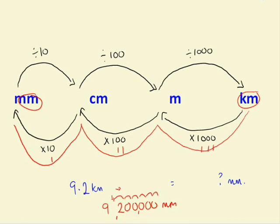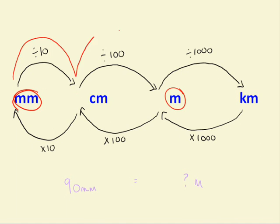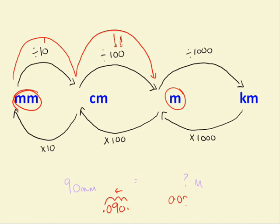We'll give another example. What is 90 millimetres in metres? We're going from millimetres to metres, so we divide by 10 and then divide by 100. Because I'm dividing, the number's going to get smaller, so the decimal place moves to the left. I move it 1, 2, 3 times — counting the zeros. So 90 millimetres equals 0.090 metres.